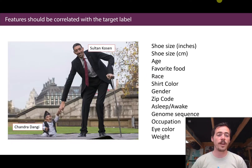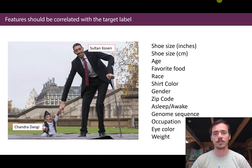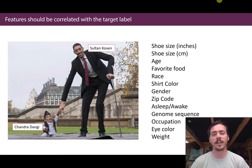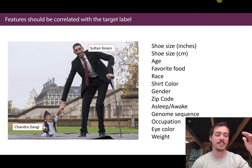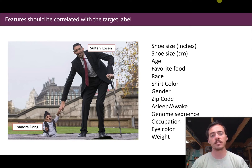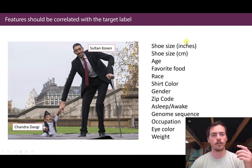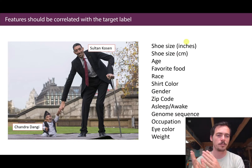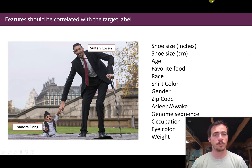One of my favorite things to talk about with features and machine learning models is the idea of predicting people's heights. Here you see Sultan Kozin, the tallest person in the world, with Chandra Dongyu, the shortest. I like this example because we're familiar with people and have a pretty good feel for what things correlate with height. I've listed variables like shoe size in inches, shoe size in centimeters, age, favorite food, race, shirt color, gender, zip code, sleep or awake status, genome sequence, occupation, eye color, and weight — and whether these would be useful features for a machine learning model trying to predict height.